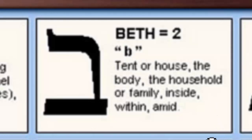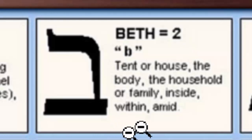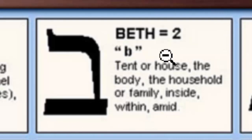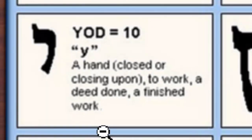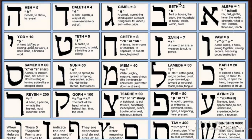That's why Aleph is the first letter in Abib — it is the leader or the first. The second letter is Beth, meaning: tent or house, the body, the household or family, inside, within, and amid — talking about an enclosed thing, like what Enoch refers to with portals and gates. This is a month — an enclosed period. Then there is the Yod: the hand closed or closing upon, to work, a deed done, a finished work — pointing to the work week or the month. Then it goes back to Beth, rounding out the word Abib — the first month.